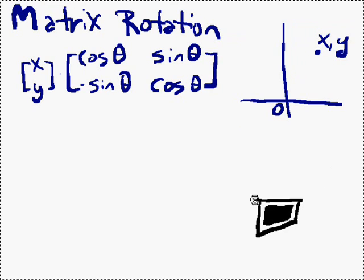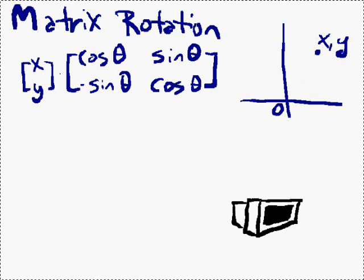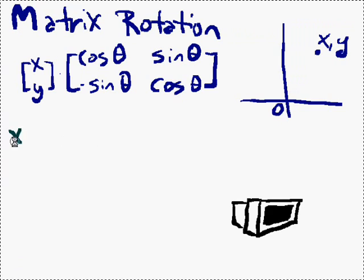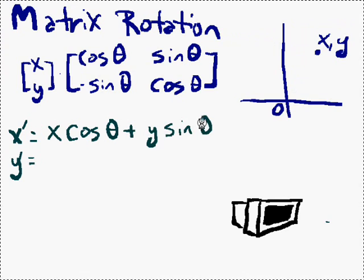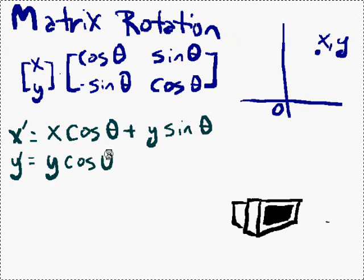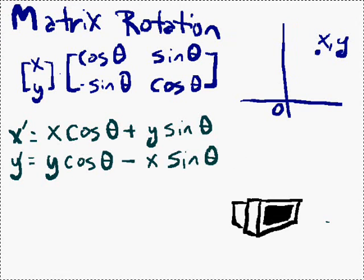Now, if you don't remember how matrix multiplication works, don't worry. It's actually pretty simple to just pre-multiply this out and end up with two equations that you can use. Your new x is going to be x times cosine theta plus y times sine theta, and your new y is going to be y times cosine theta minus x times sine theta. And if the sine thetas and cosine thetas are freaking you out, relax.